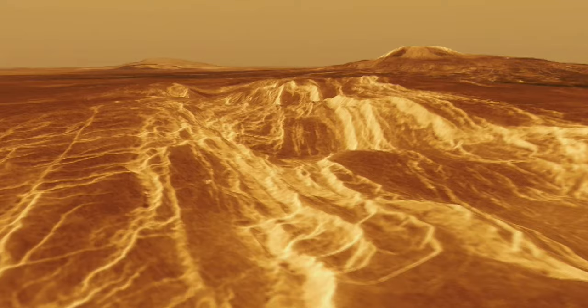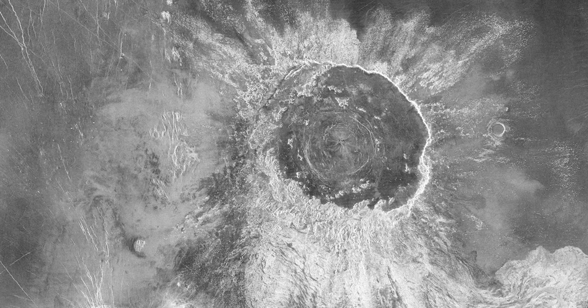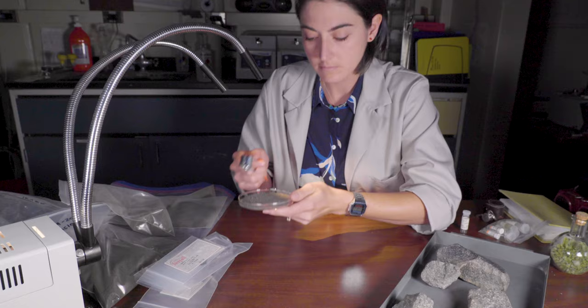Instead we might have sent a satellite to another planet and it's taken a picture of the surface and we can look at that picture and try to estimate what we think the chemistry of the surface is.